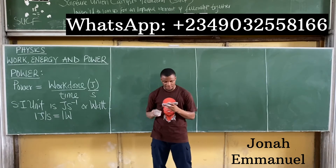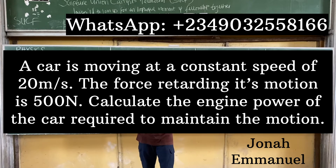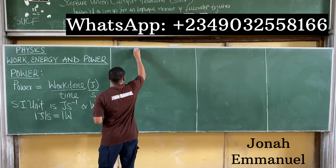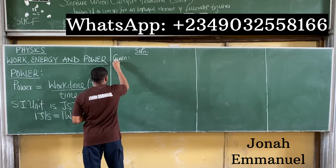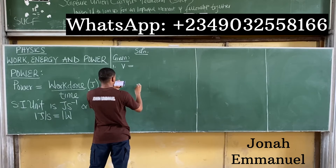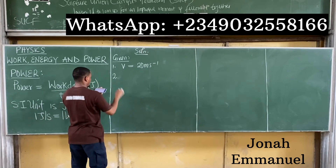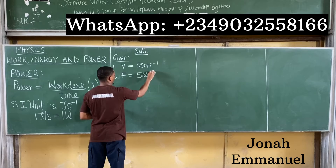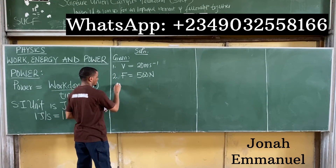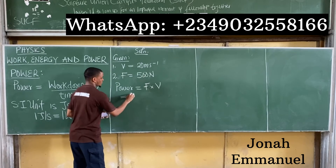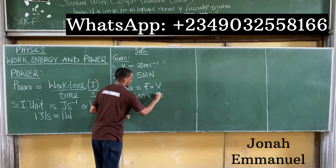Question one: A car is moving at a constant speed of 20 meters per second. The force resisting its motion is 500 newtons. Calculate the engine power required to maintain the motion. Given: velocity v = 20 m/s and force F = 500 N.